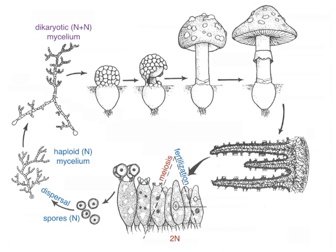Those haploid mycelium come in different mating types. Some might be a plus mating type and others a minus mating type, which is sort of like male and female, but not really, because we couldn't know which one is male and which one is female. If a plus mating type and a minus mating type get together, that is plasmogamy — they merge their cytoplasm, but they don't really merge their nuclei yet. The nuclei still stay separate and so it's a dicaryon. That dicaryotic mycelium will go on and do a lot of foraging and build up its energy reserves until conditions are just right, and then it'll make a mushroom.